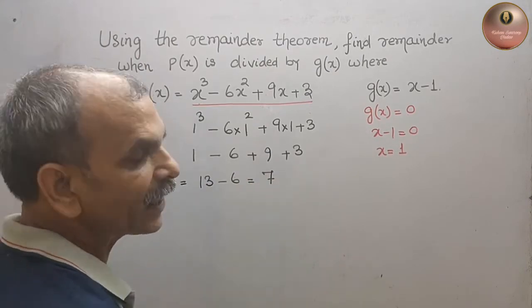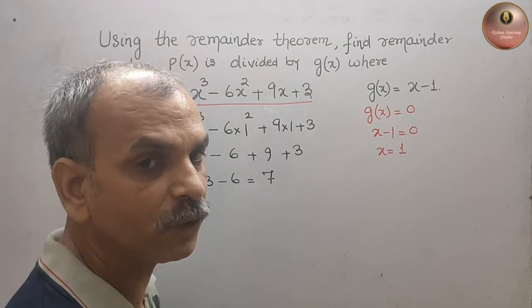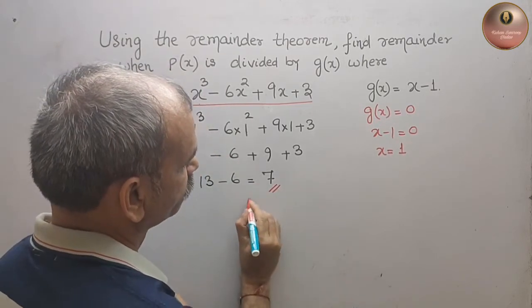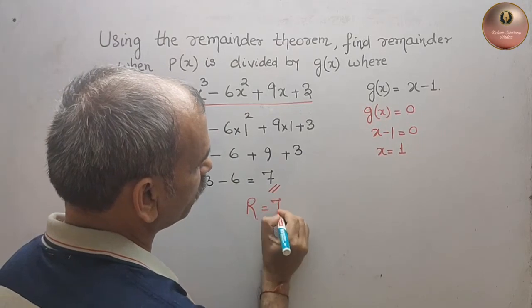You will get the 7 value. Therefore, this is your remainder. R is equal to 7.